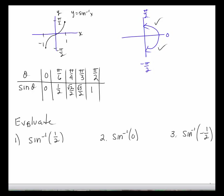So let's evaluate the inverse sine of 1/2. We want to know what is the angle whose sine is a half. When we go back to the sine function, I know the sine is a half when the angle is pi over 6, and pi over 6 is in the first quadrant, and I'm allowed to use that value. So the answer is pi over 6.